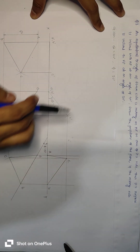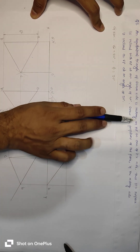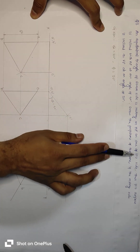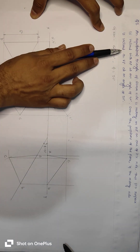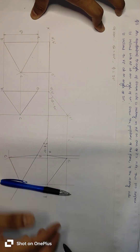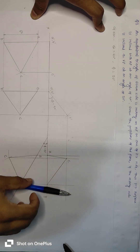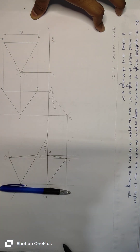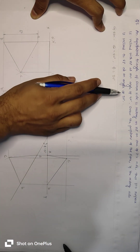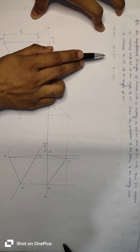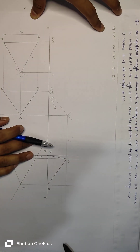In the third question, an equilateral triangle of 60 mm side is resting on HP on one of its sides. Its surface is inclined with HP at an angle of 40 degrees. Draw the projection of the plane if the resting side is inclined to VP at an angle of 30 degrees. So theta 40 degrees and phi 30 degrees are given.